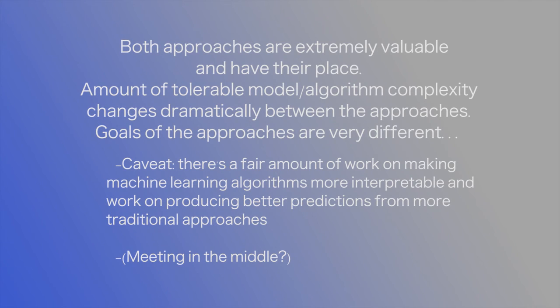Both approaches are extremely valuable and they have their place. However, the amount of model complexity, assumptions, and goals differs quite a bit between the two. The machine learning community has started to build superpopulation models to evaluate their algorithms, connecting it to traditional statistics. There's also been a lot of work on making machine learning output more interpretable in addition to producing high-quality predictions. Conversely, many people are taking traditional statistical approaches and adding complexity to produce better predictions. In a lot of ways, the two areas are meeting in the middle, and these distinctions are getting blurred quite a bit.